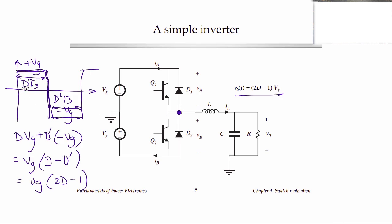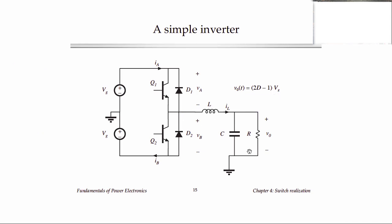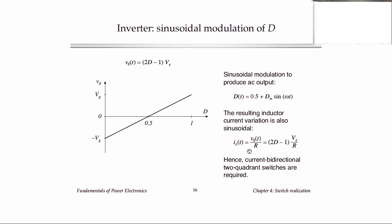So this low-frequency component of this waveform gets filtered out by the LC filter, and that's what's applied across our output load. Here's a plot of that function. You can see if D is one-half, the function goes to zero. So we have zero net output voltage at duty cycle of one-half.